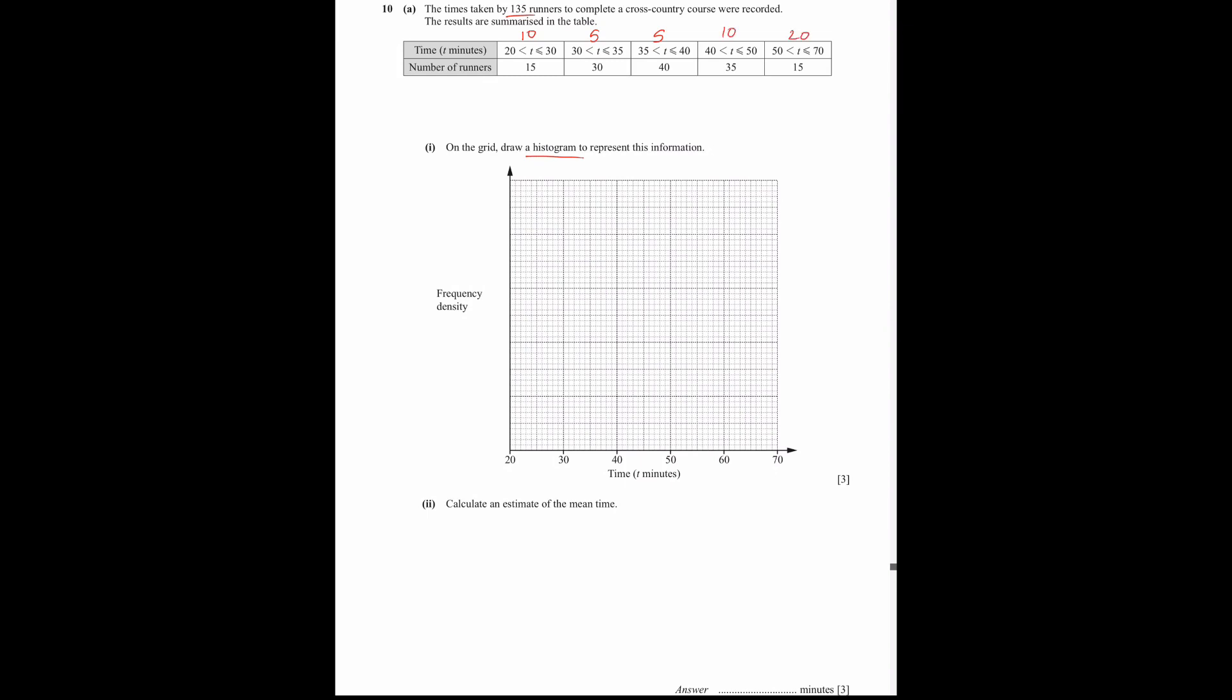When your class size is different length, basically class width also, whenever you have different class widths we take the y-axis frequency density. Frequency density is also taking a frequency and dividing it by the class width.